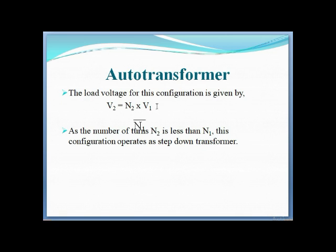The voltage for this configuration is given by V2 = (N2/N1) × V1. As the number of turns N2 is less than N1, this configuration operates as a step-down transformer.